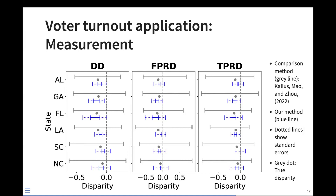In the measurement application figure, each row represents a different state and each column a different common disparity metric. The gray bar shows a comparison method from Kallis, Mao, and Cho using robust optimization without access to a labeled data set. The gray dot is the true disparity, measurable because we have self-reported race data. Our method is shown in blue: solid error bars represent the bounds from our two estimators, and dotted lines show the bounds including standard error. Having that small amount of labeled data makes a big difference in achieving much tighter bounds on disparity.